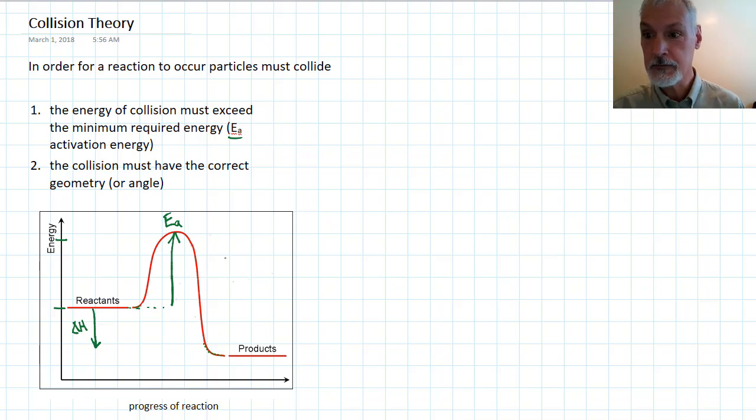If I was to consider the reverse reaction, I'll do this one in red, I would need more activation energy in order for a successful collision to occur. So that would be the activation energy for my reverse reaction. So that's one way we can get a measure of the activation energy.